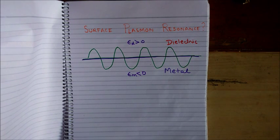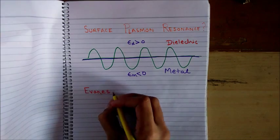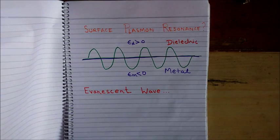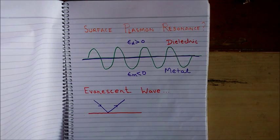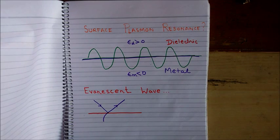There are evanescent waves on both sides of the interface. What are evanescent waves? An evanescent wave is a near field wave with an intensity that exhibits exponential decay without absorption as a function of distance from the boundary at which the wave was formed.